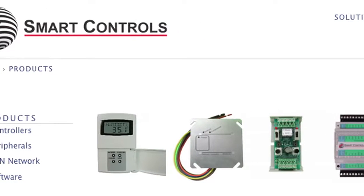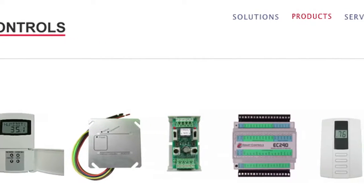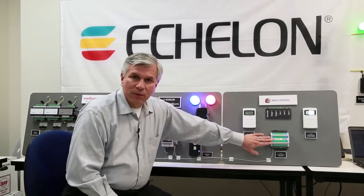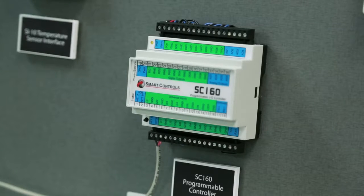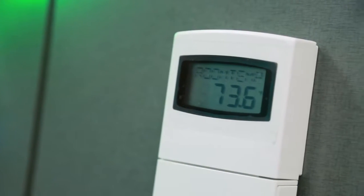Smart controls also builds building controls and they've created new controls also based on Echelon's FT 6050 smart transceiver. So this is their controller for buildings and we have two of their sensors. These are temperature sensors that can be used to control the temperature within a room and also display the temperature to the occupants of the room.